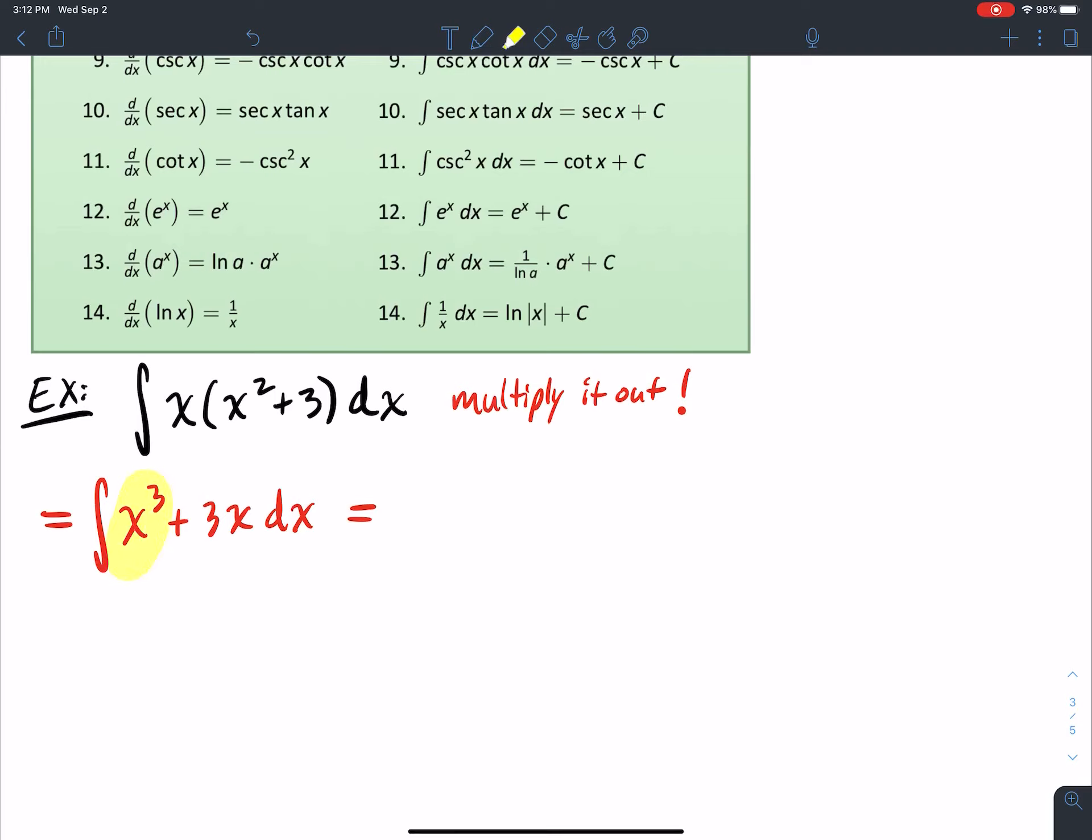The integral of x³ happens to be what? Well, it happens to be add 1 to the exponent. So that's 3 plus 1 gets me 4. Divide by the exponent. What's the exponent? 4. So I'm going to divide by 4. In the second part here, I'm going to integrate 3x. The exponent is understood to be a 1 because there's no number there. It's understood to be a 1. So I add 1 to 1, I get 2, and then I divide by 2. So I've integrated each piece individually, and then don't forget your plus C there.